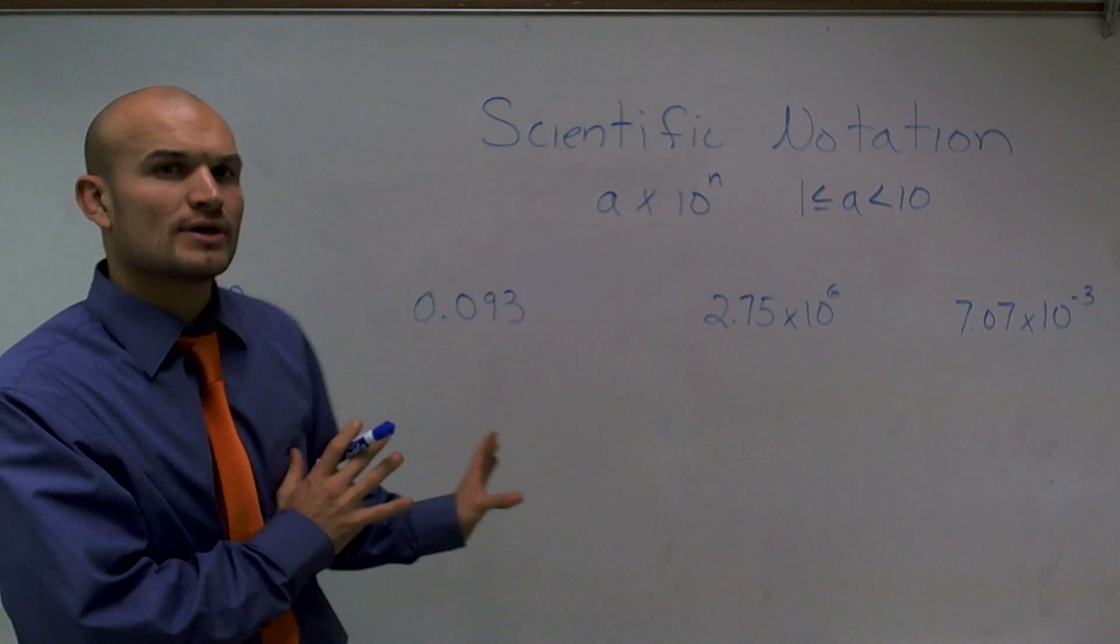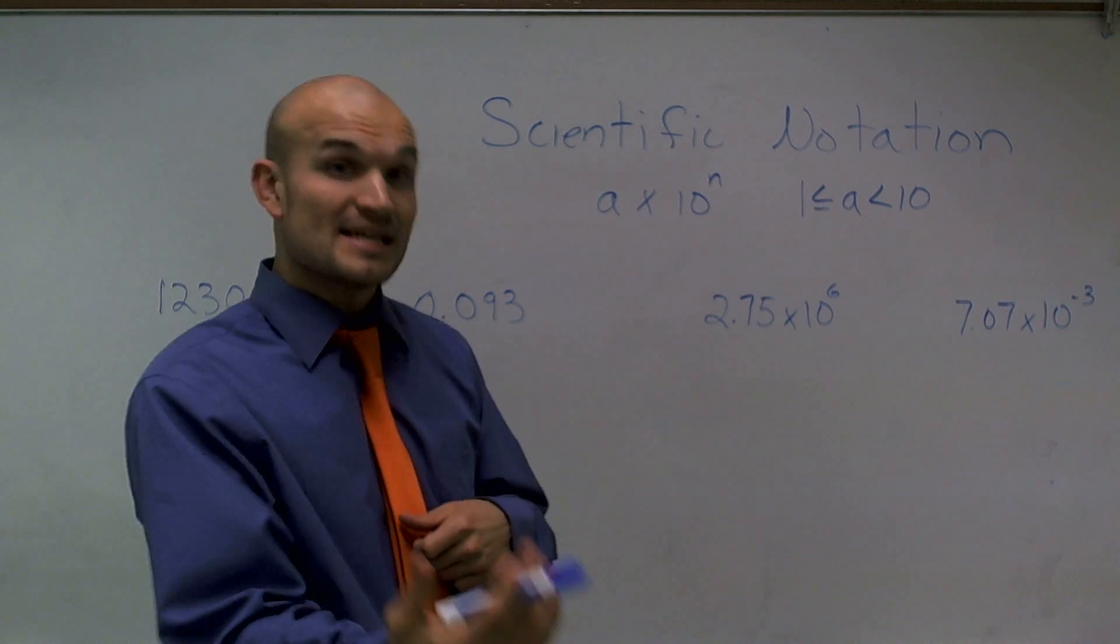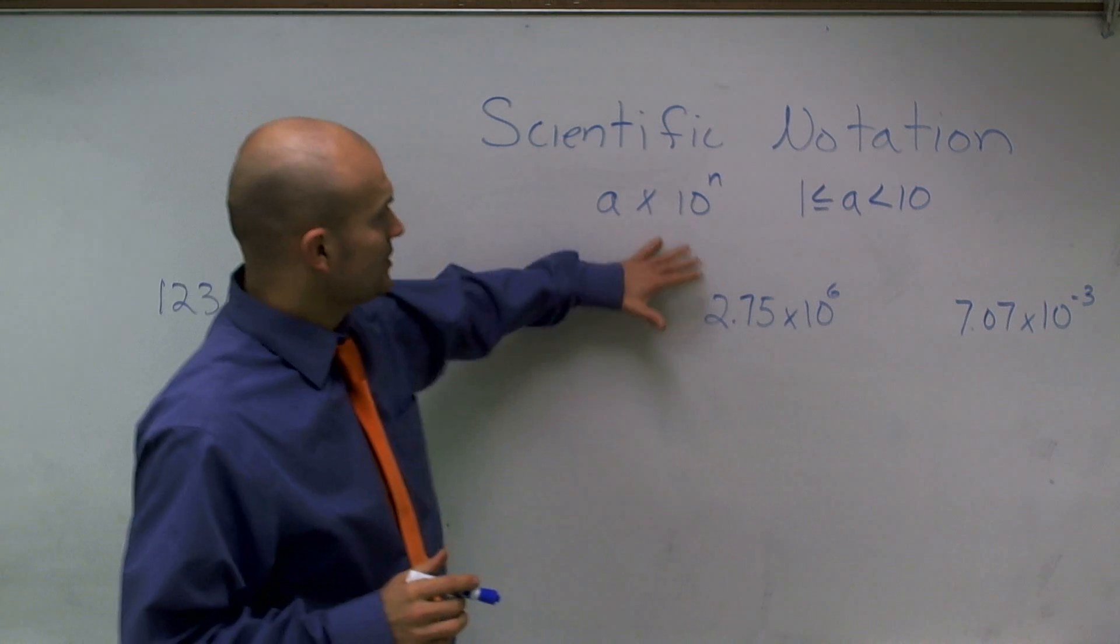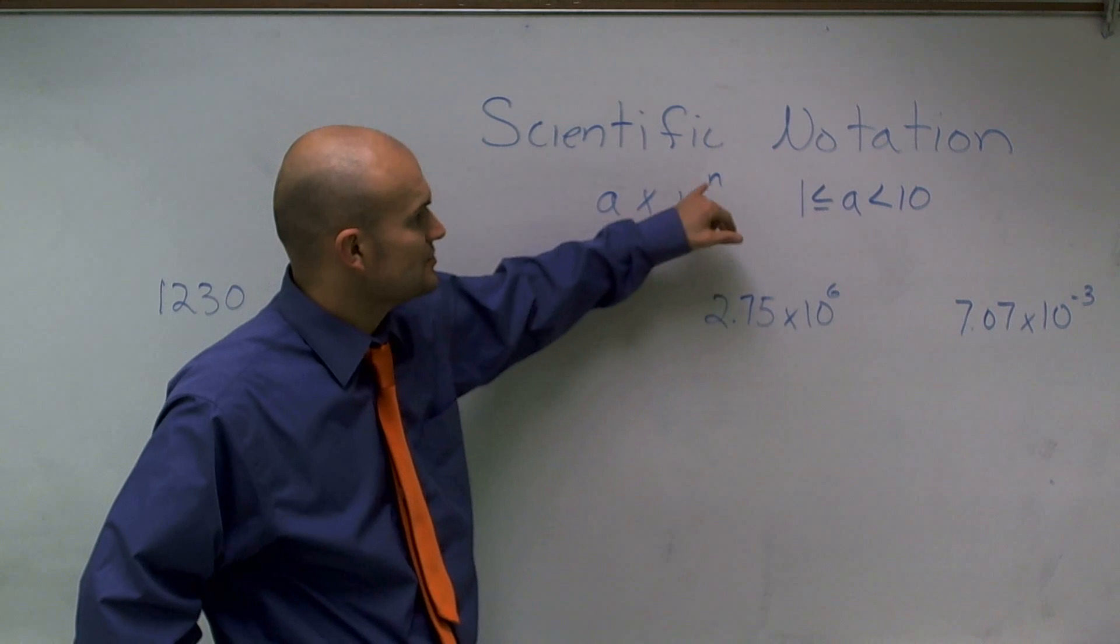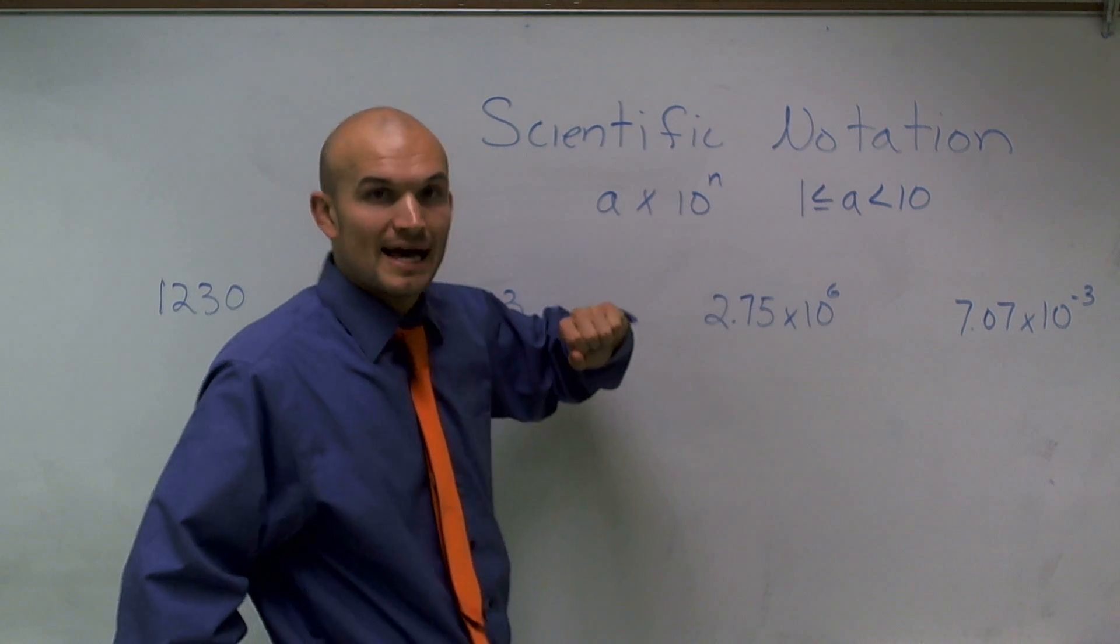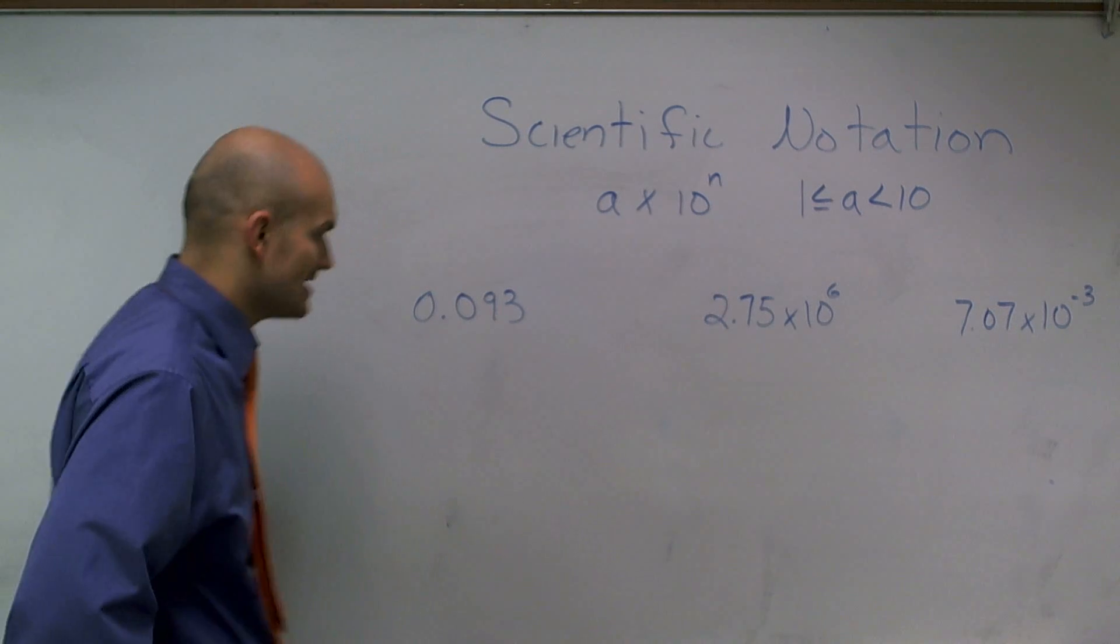But what I just want to work on today is converting numbers to scientific notation, and then converting numbers in scientific notation back into another form. So if we look at scientific notation, it can come in the form of a times 10 to the nth power, where n is any integer, and a is any number between 1 and 10.